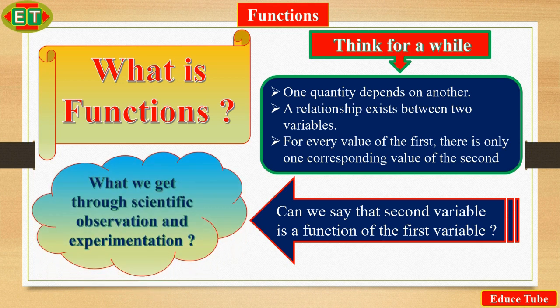One quantity depends on another. A relationship exists between two variables. For every value of the first, there is only one corresponding value of the second. So knowing up to this, can we say that the second variable is a function of the first variable?